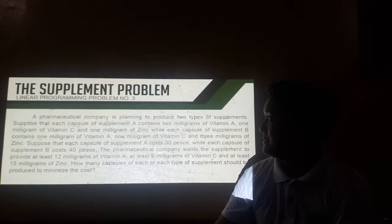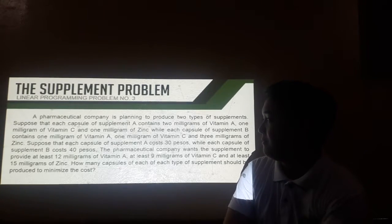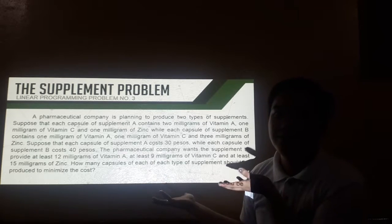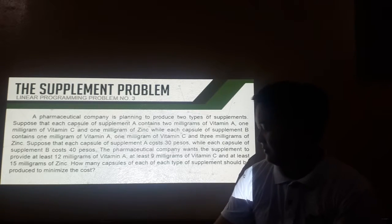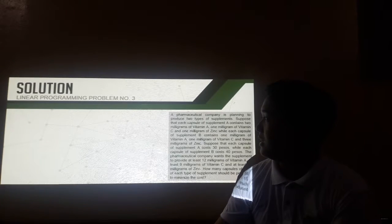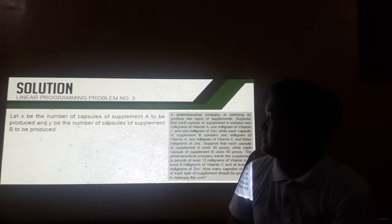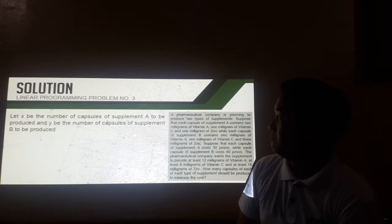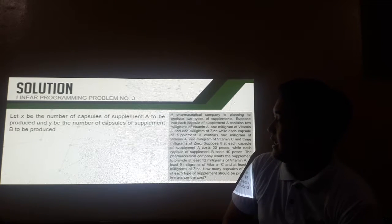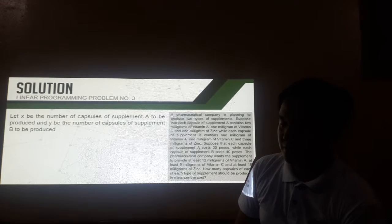The next problem is the supplement problem. It's also a little bit long, so just read it on your handout. Let X be the number of capsules of supplement A to be produced and Y be the number of capsules of supplement B to be produced.